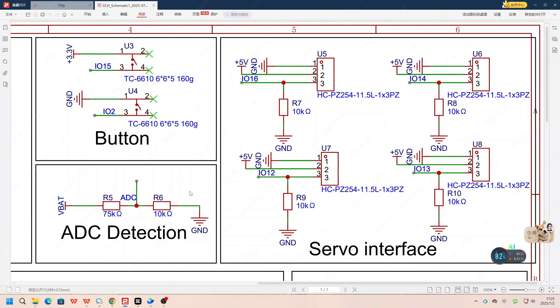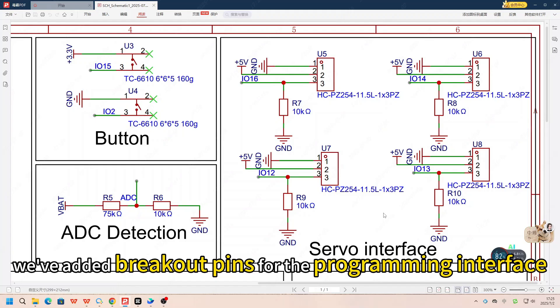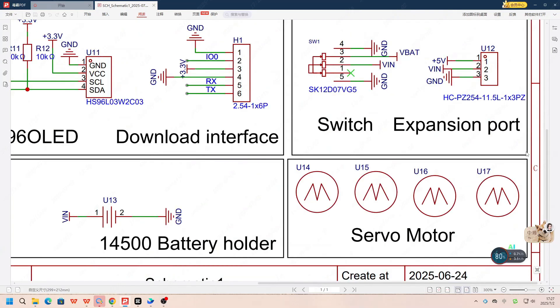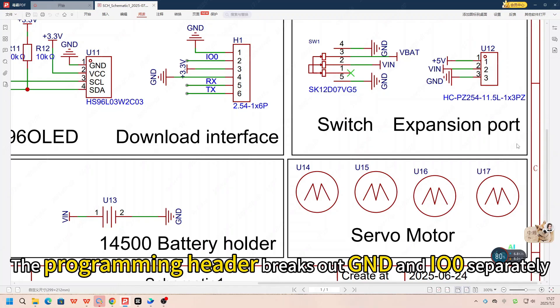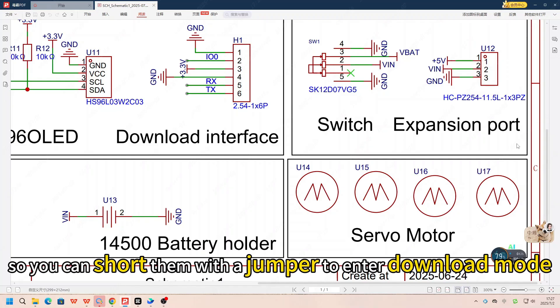As long as the ratio is right, we can swap in similar resistors. To make it more practical, we've added breakout pins for the programming interface, 5V and battery charging. The programming header breaks out GND and IO0 separately, so you can short them with a jumper to enter download mode.